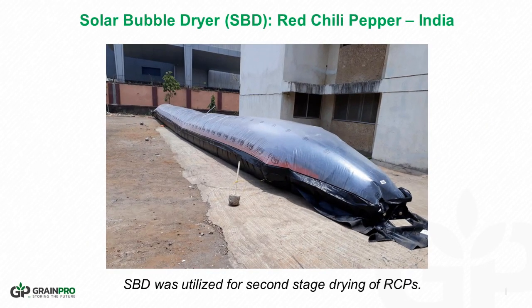The Solar Bubble Dryer was utilized in India for second-stage drying of red chili peppers. The RCPs were initially dried using sand drying, and the SBD was then utilized to further reduce moisture for safe storage. The SBD protects commodity from intermittent rain, and since it is designed as a drying tunnel, it prevents entry of contaminants and highly promotes hygienic drying. When drying freshly harvested spices with high moisture, it is recommended to use an elevated rack with the SBD for efficient removal of moisture by preventing heavily moist air from accumulating in the drying tunnel. Regular mixing is a must to ensure uniform drying, as uneven moisture content leads to quality deterioration and spoilage during storage.